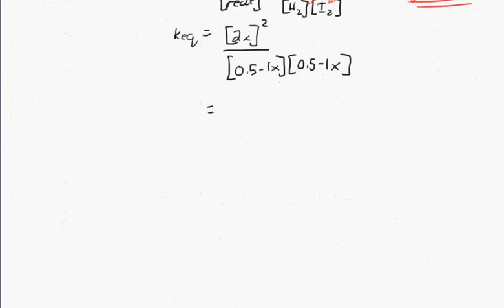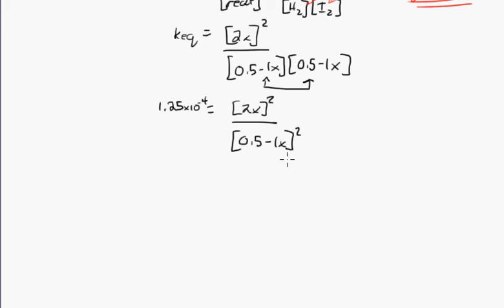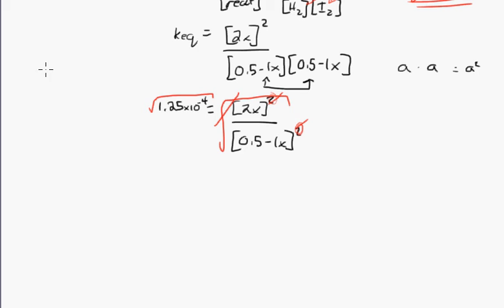The Keq value given is 1.25 × 10⁻⁴. So we have 1.25 × 10⁻⁴ = (2X)² / (0.5 − X)². Because anything multiplied by itself is that value squared, the denominator can be written as (0.5 − X)². Since both numerator and denominator are squared, we can square root both sides. Taking the square root gives us 0.01118 = 2X / (0.5 − X).